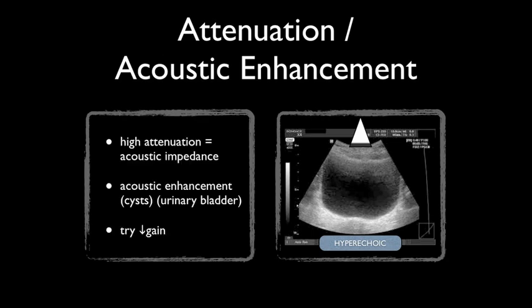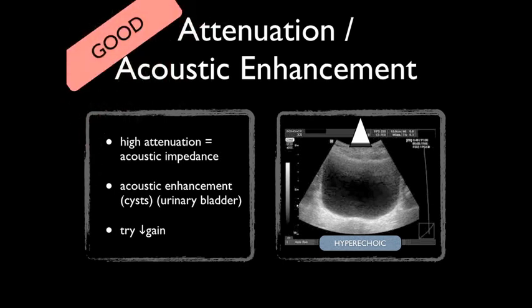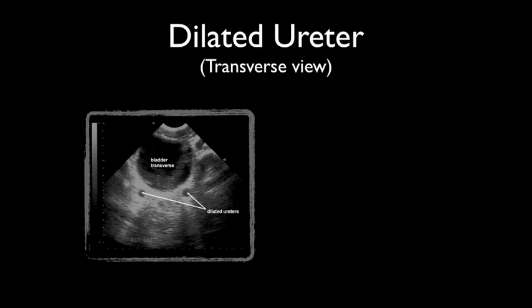Acoustic enhancement is often used to differentiate cysts, which are lower attenuation structures and thus form acoustic enhancement, from cystic tumors and abscesses that have higher attenuation. A normal urinary bladder should display acoustic enhancement. Here's an example of dilated urinary ureters seen below the urinary bladder in the transverse view. For the most part, ureters are difficult to find because their view is usually obstructed by bowel.